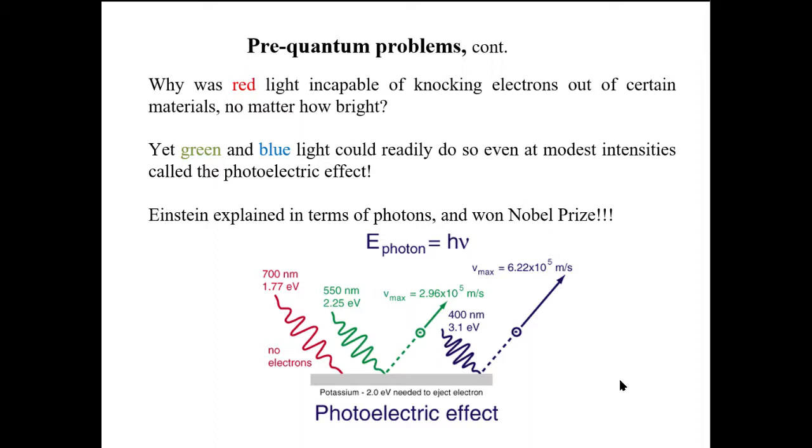You will notice if you are using red light, no photoelectron will be ejected from the potassium surface, no matter how bright or intense the light is.